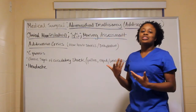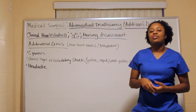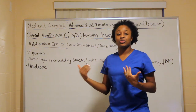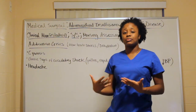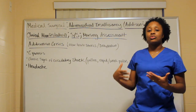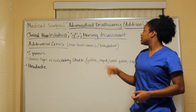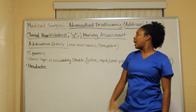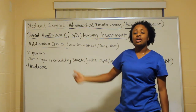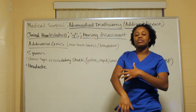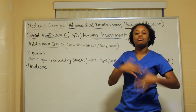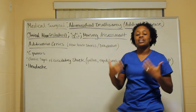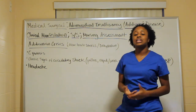Continuing with signs and symptoms, there is also the Addisonian crisis, where you do not want the patient to end up. This is where the patient goes into circulatory shock. It occurs mainly from stress or dehydration, and the patient will appear cyanotic — a bluish tint color.